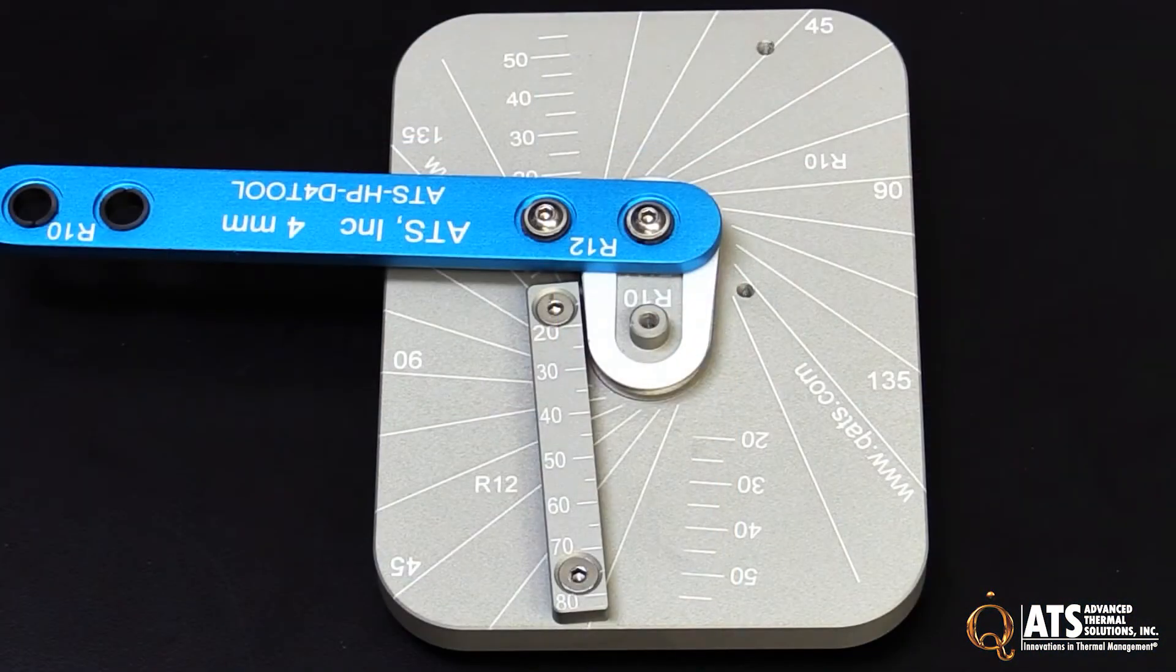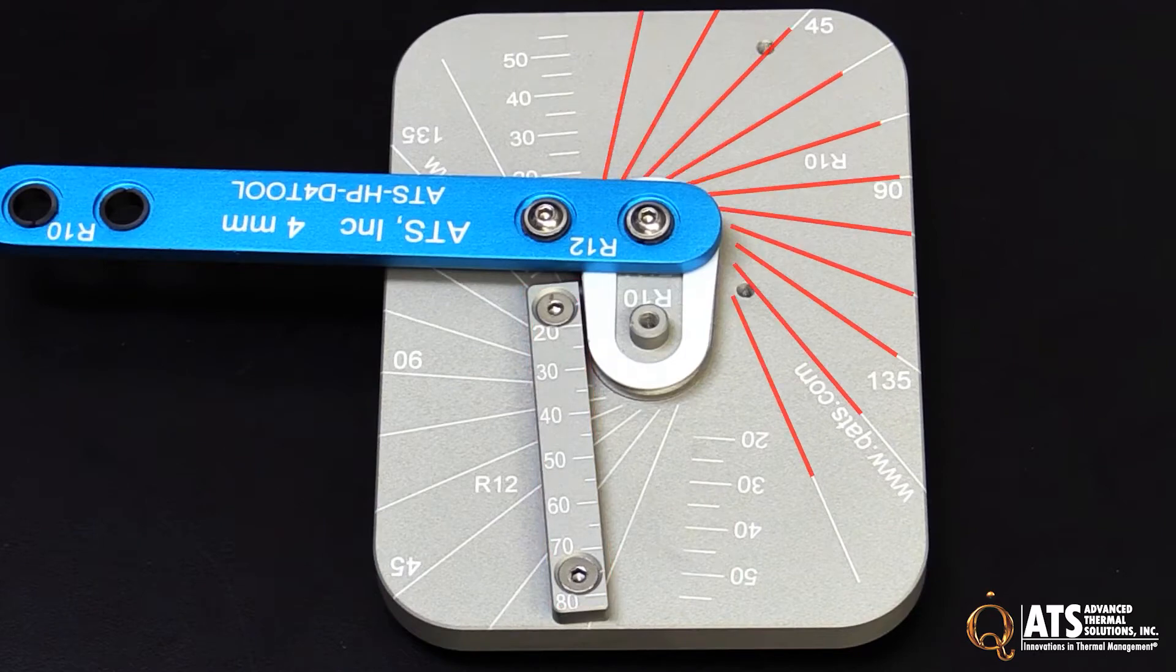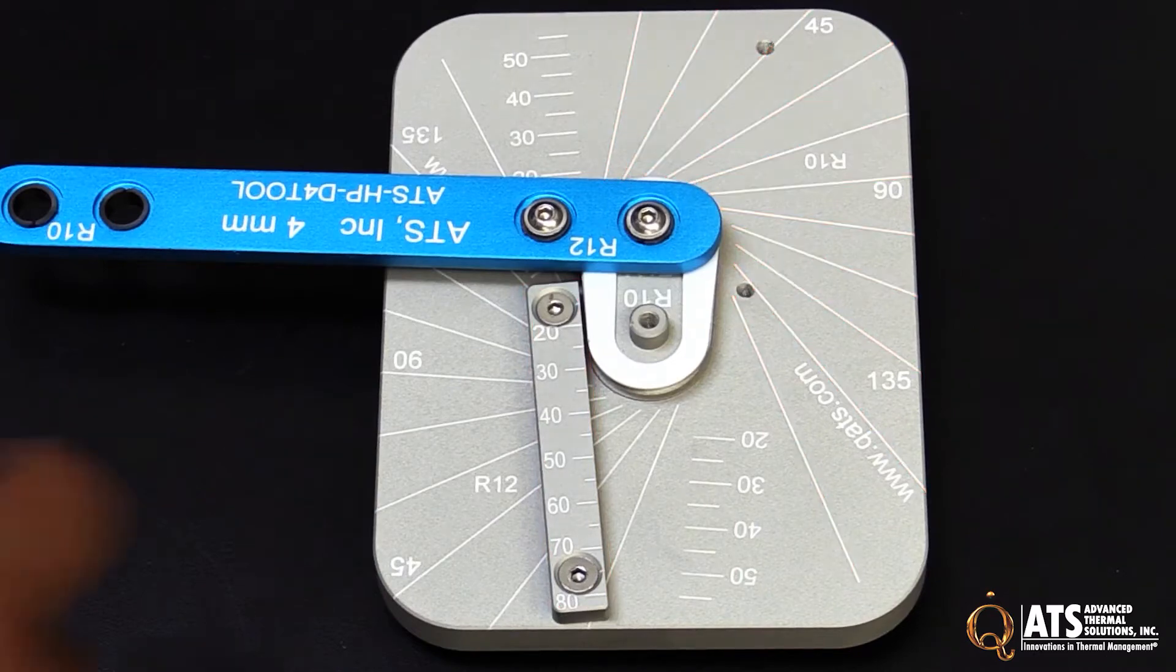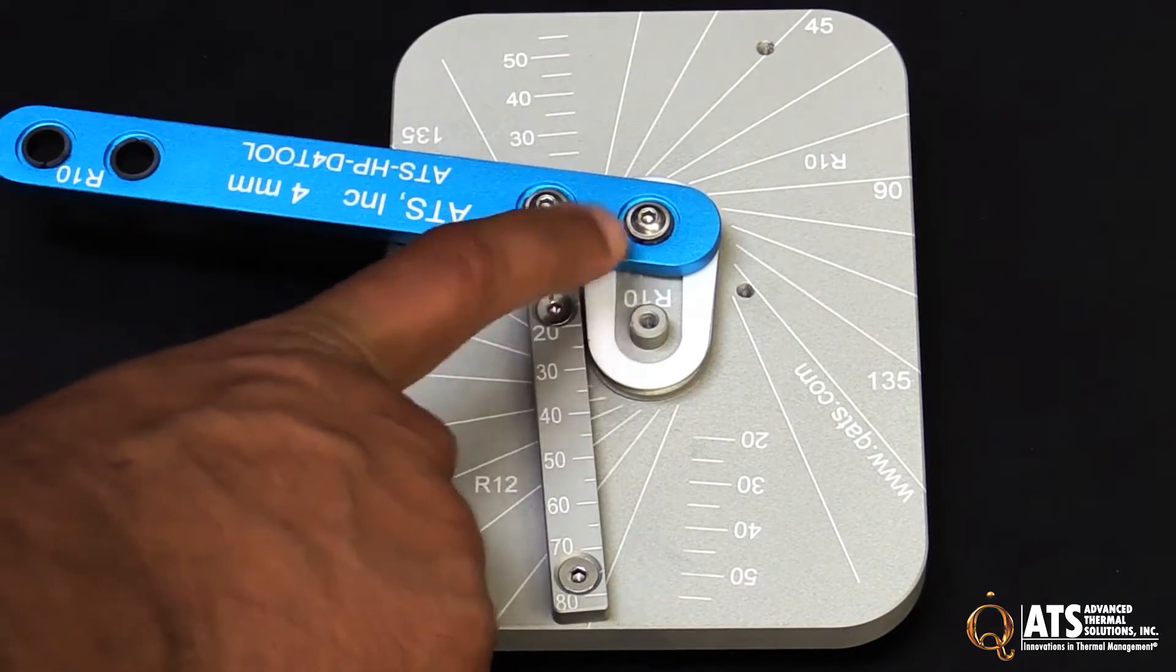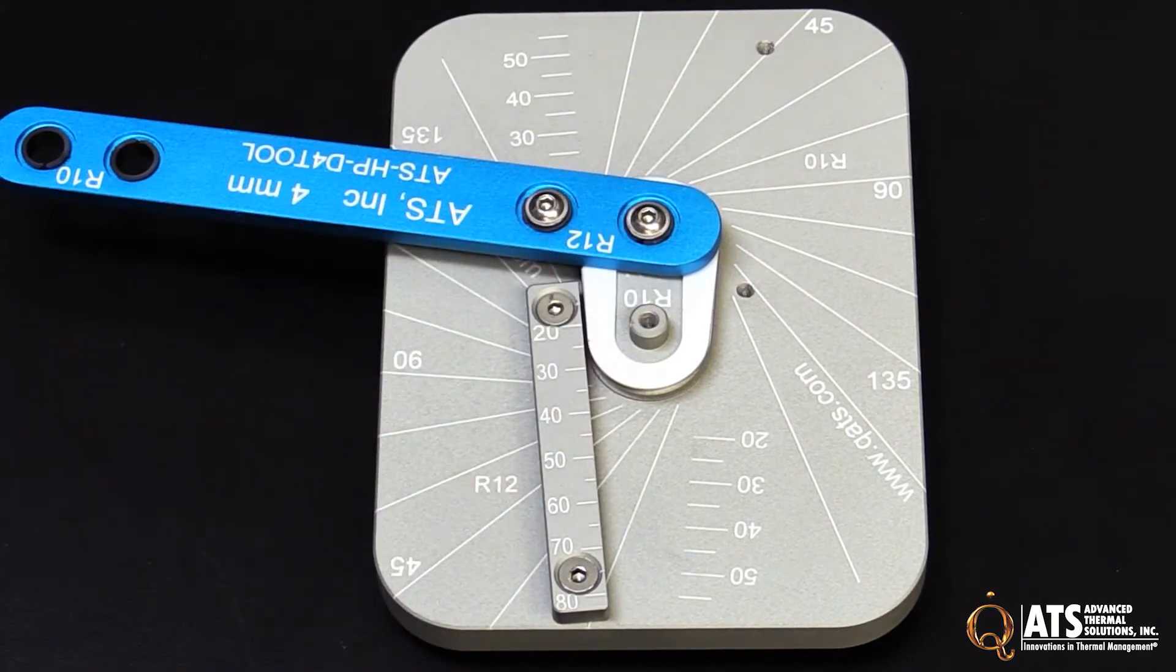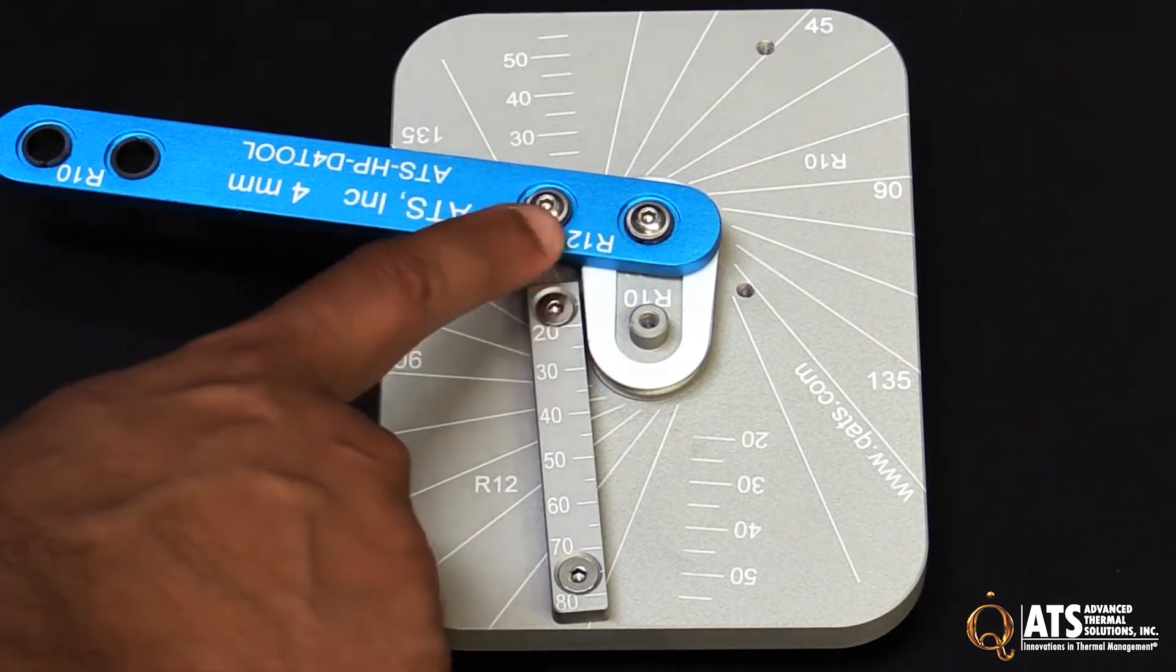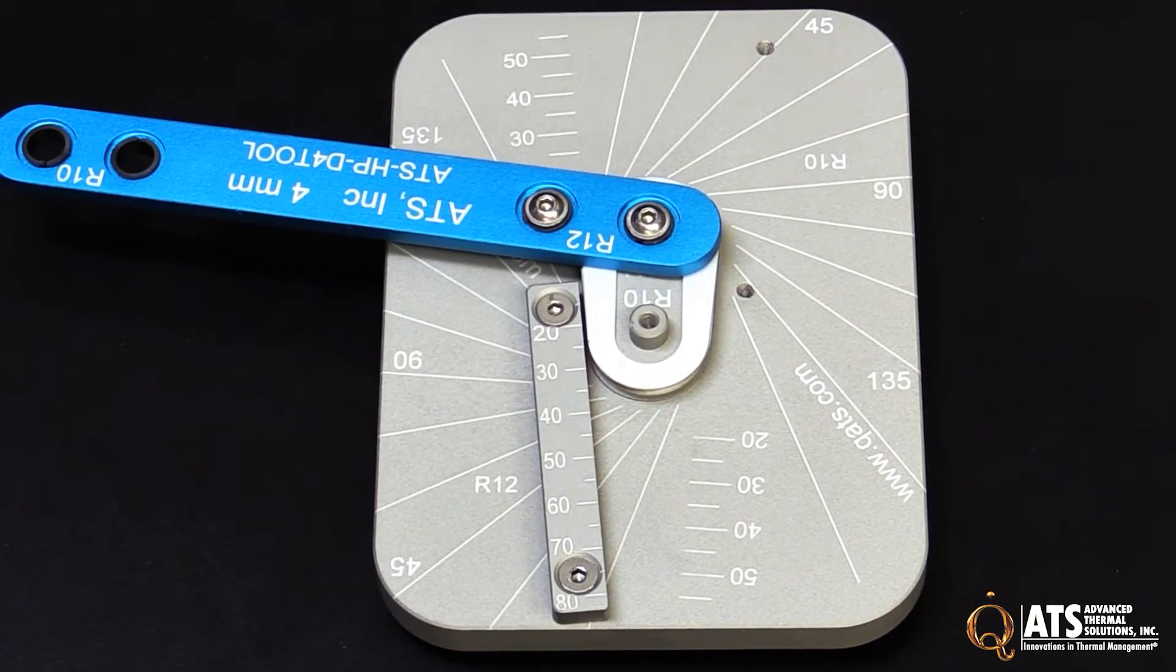The bending tool is quite simple. It has a scale here for lining up the end of your heat pipe, and markings indicating the angle of your bending. The tool also comes with two different radii that you can use for bending. Right now we have it lined up to the 12 millimeter radius.